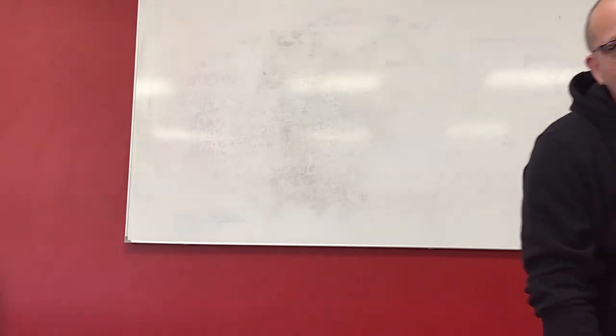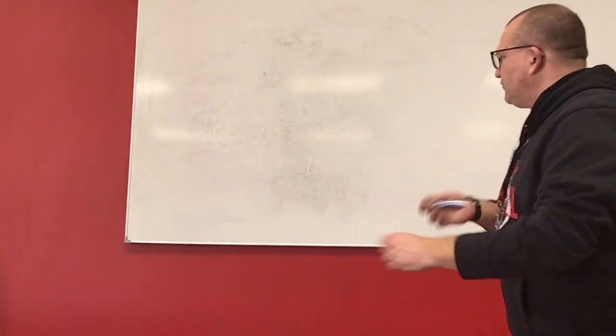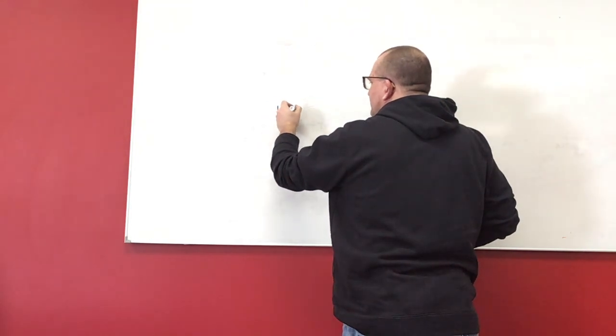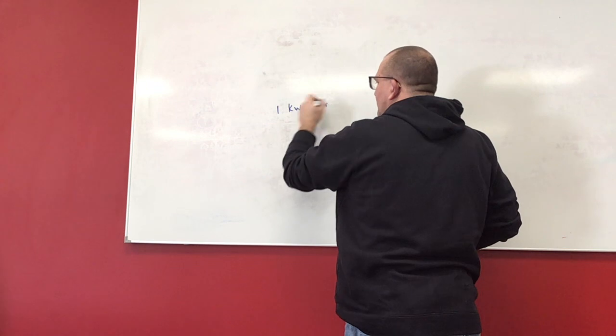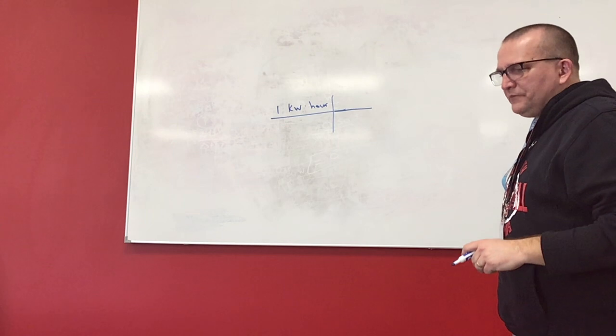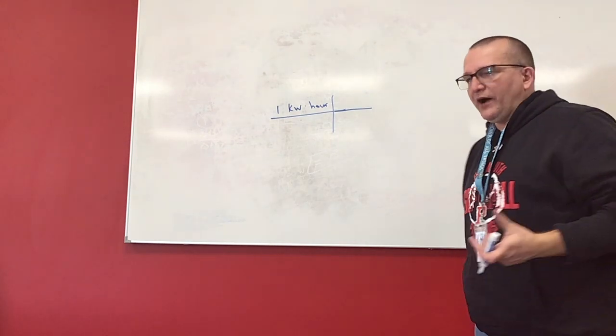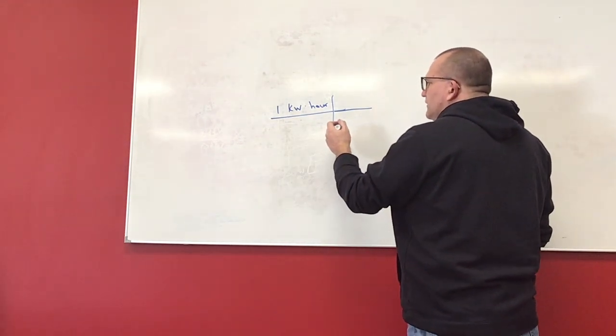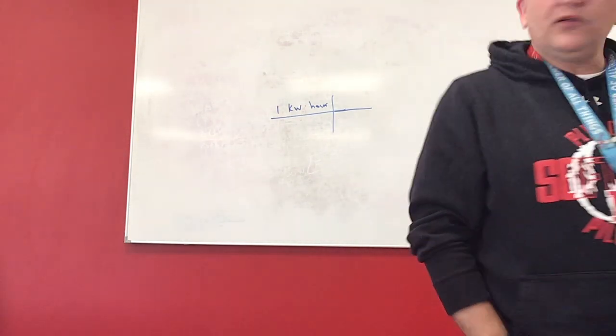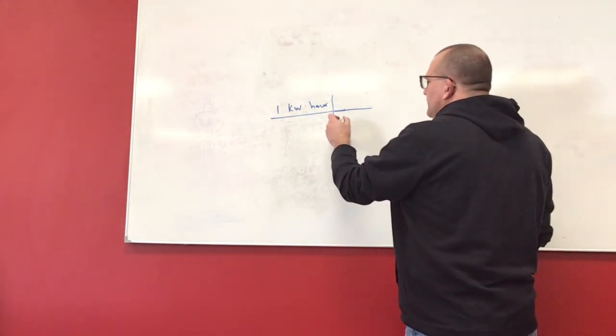Alright, we want to take one kilowatt hour and convert it to joules. So we're taking kilowatt hours and converting it to energy units. This is not as difficult as it may seem, but we'll walk through the steps. So we got one kilowatt hour and we want to convert it to joules. Let's think about watts and kilowatts. We got kilowatts to watts. We know one kilowatt is a thousand watts, so that gets us to watts, which is what we want.